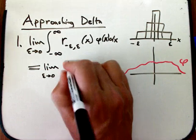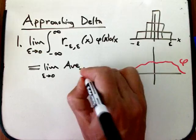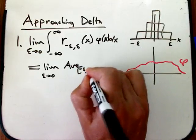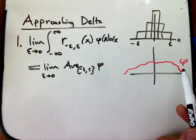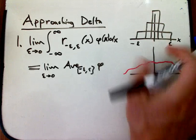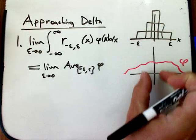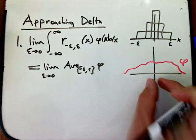Because this is such a special function, this is just averaging over the interval from minus epsilon to epsilon of phi. Now, the average values of a decently nice function are going to converge as the interval over which you're averaging gets smaller and smaller.